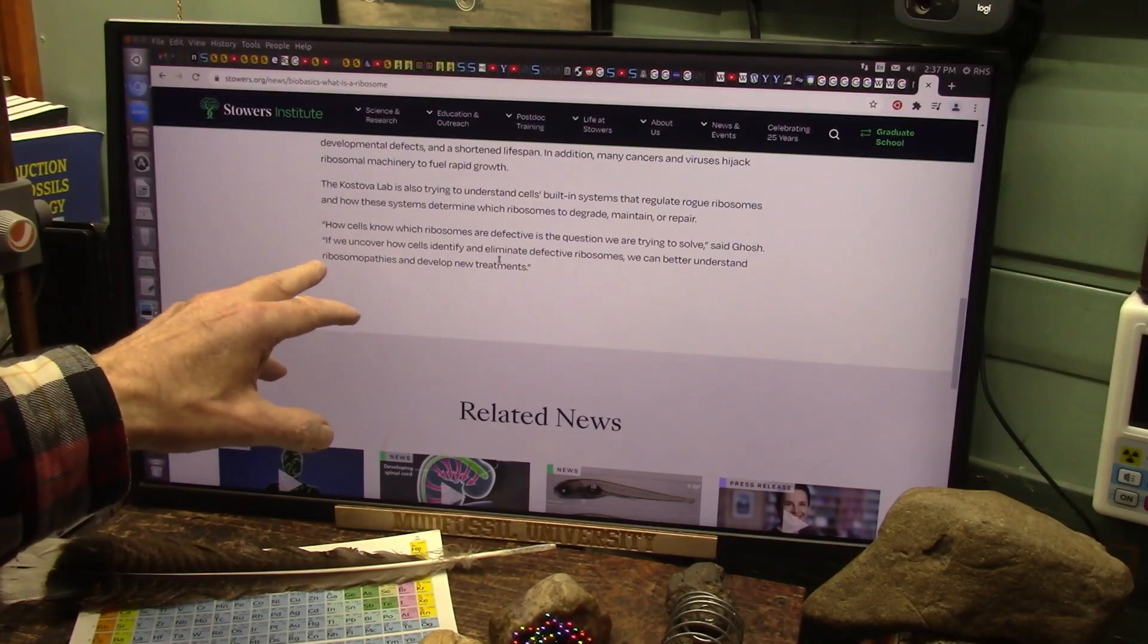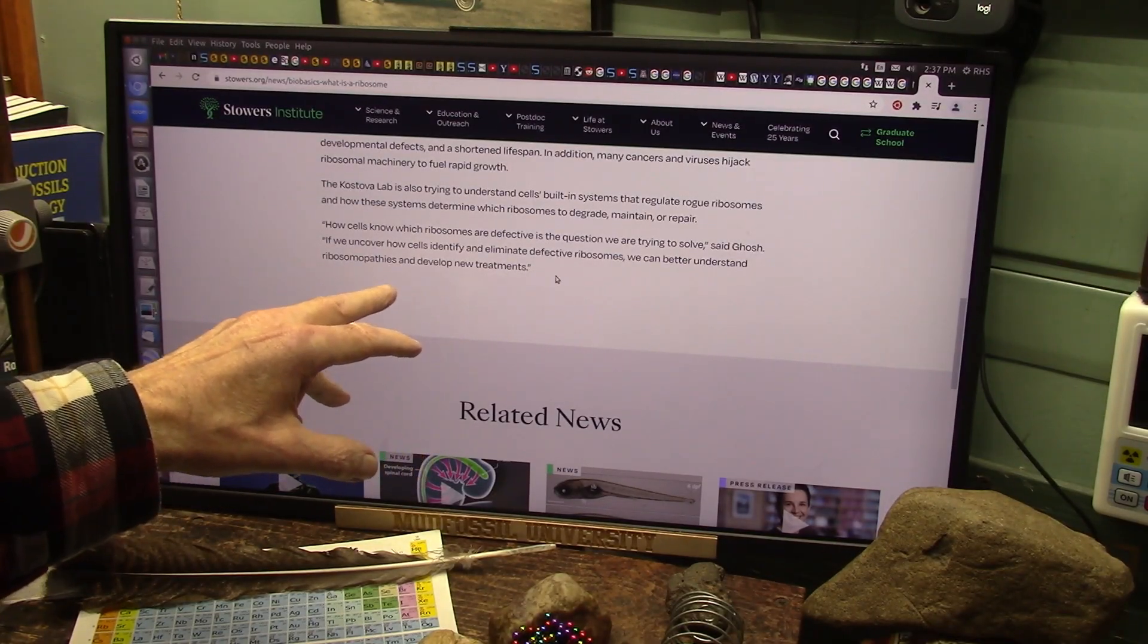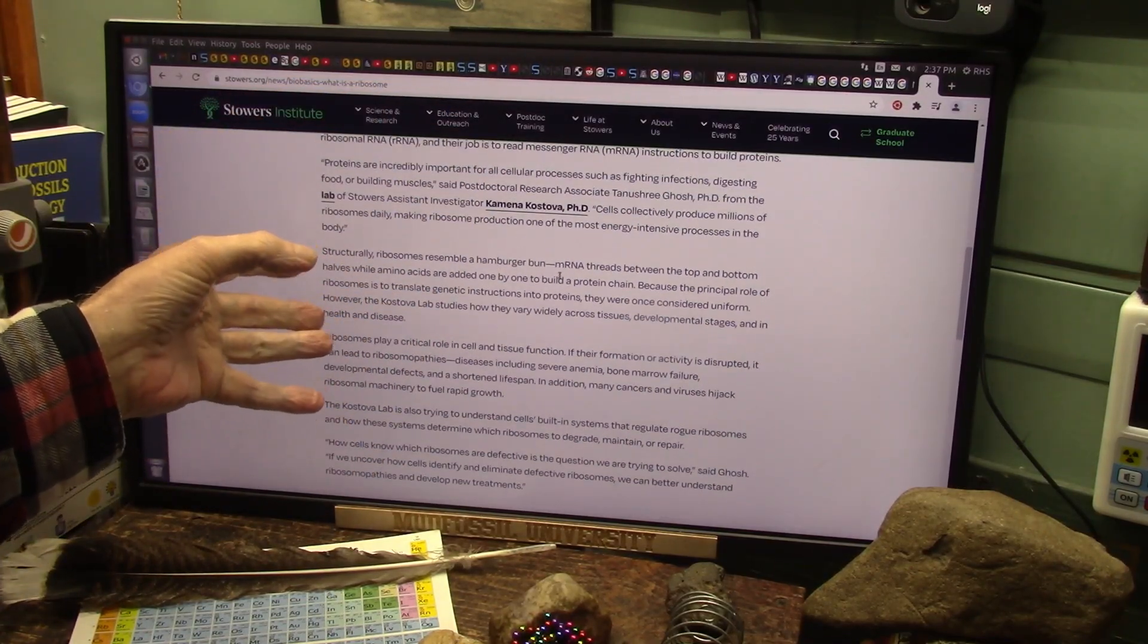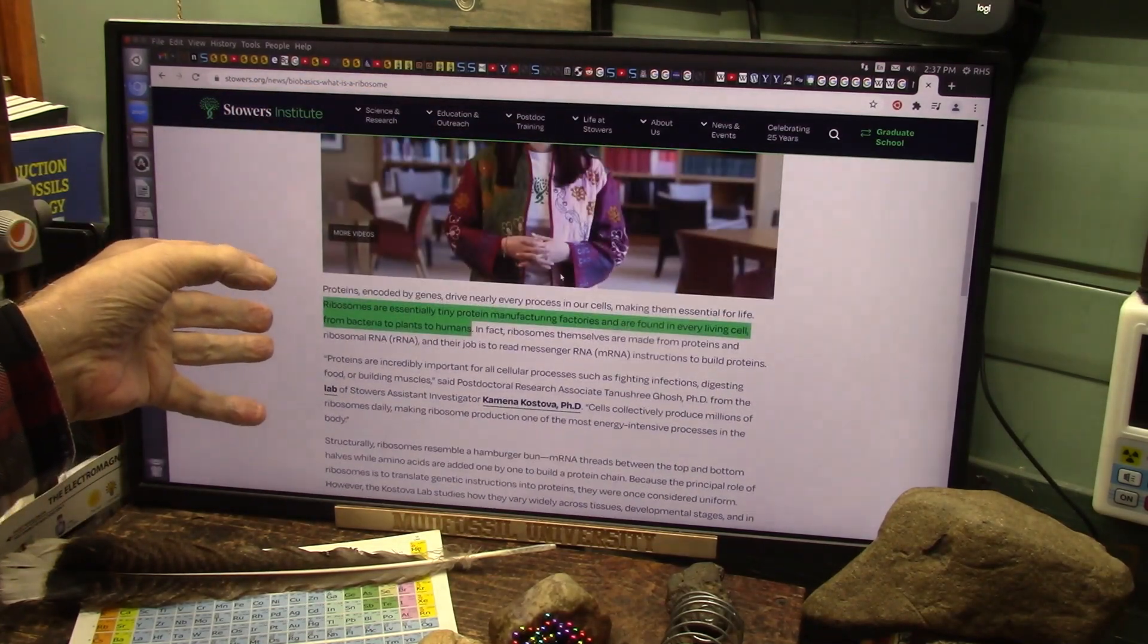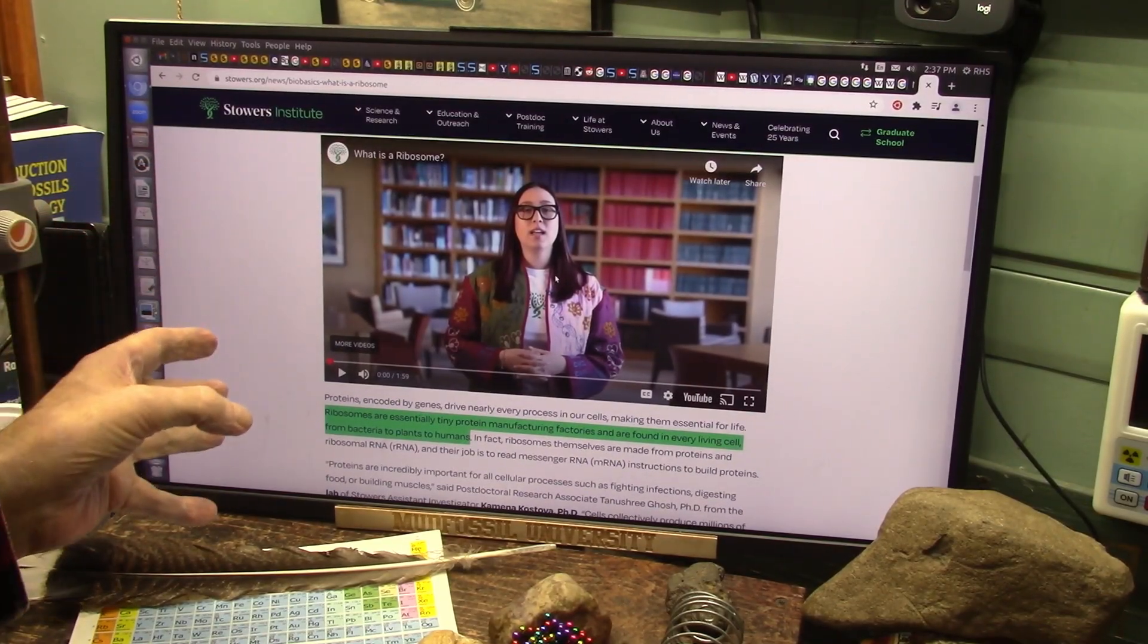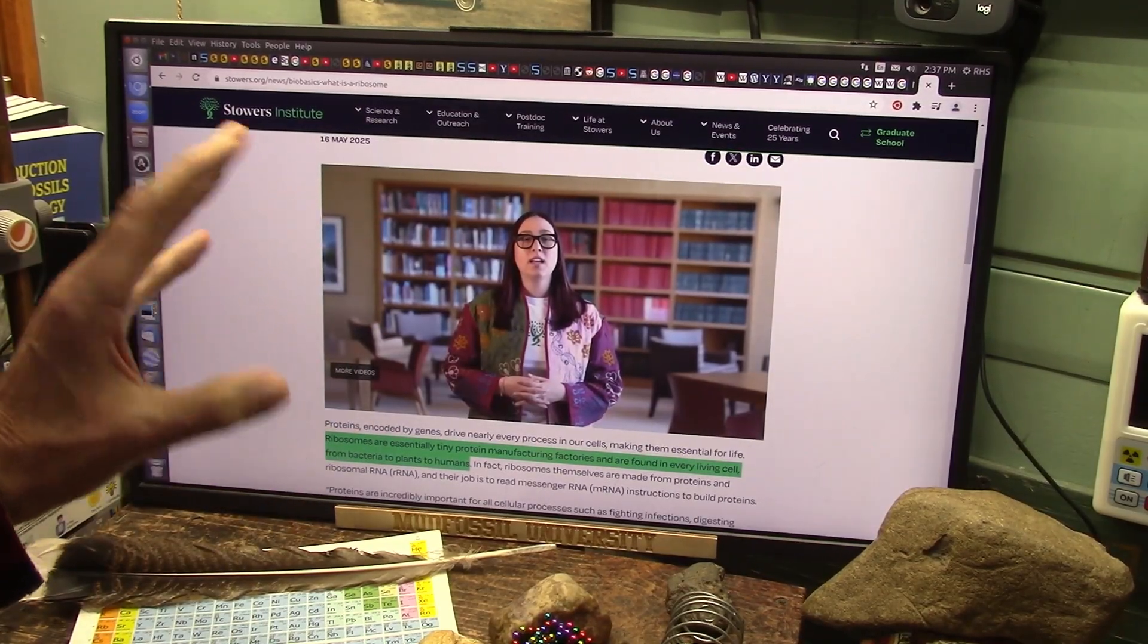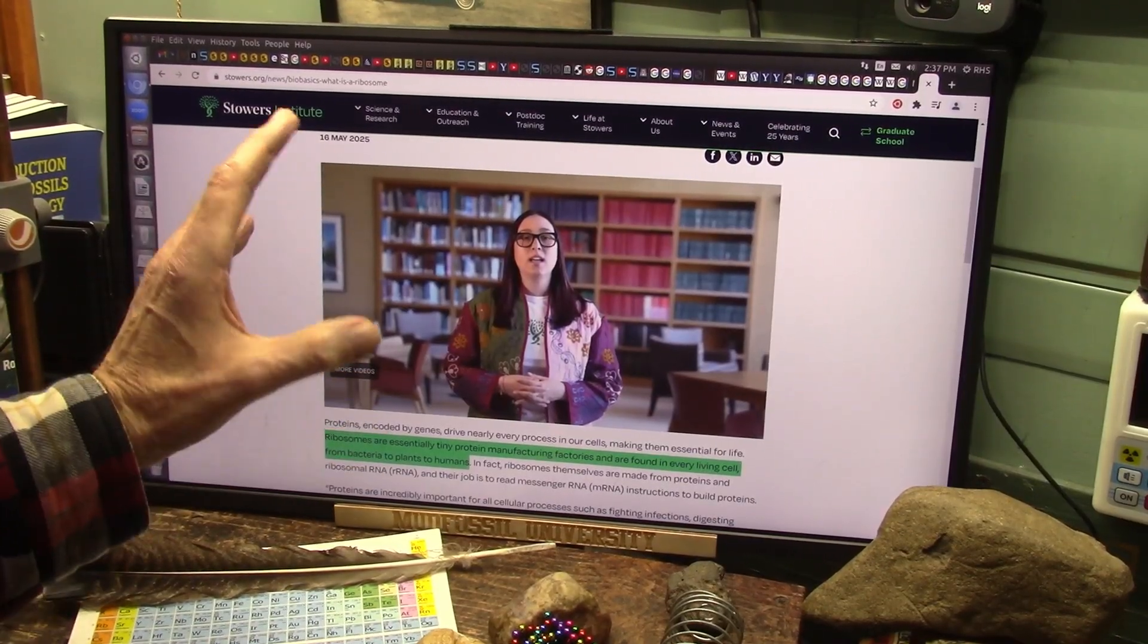If we uncover how cells identify and eliminate defective ribosomes, we can better understand ribosomopathies and develop new treatments. Well I believe it's all got to do with the bacteria that create the ribosome. If you don't have the right bacteria or your bacteria is damaged, you got to start with the bacteria.